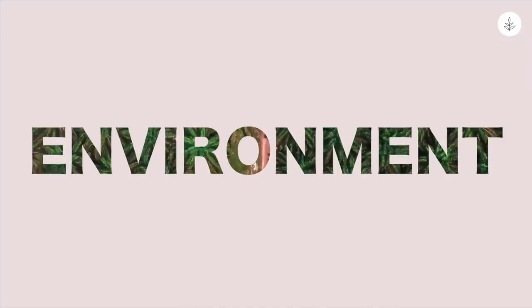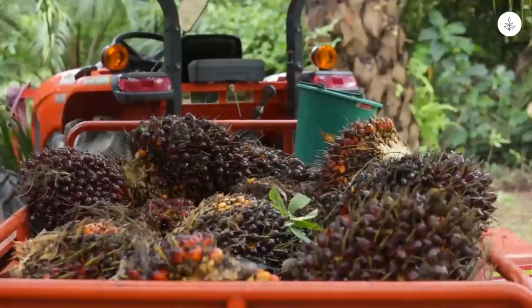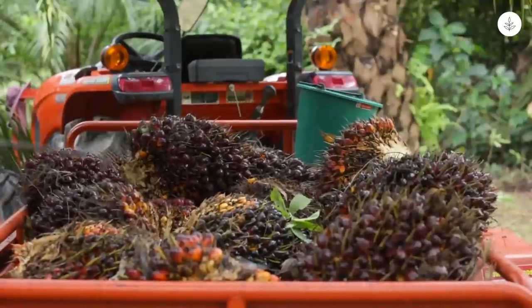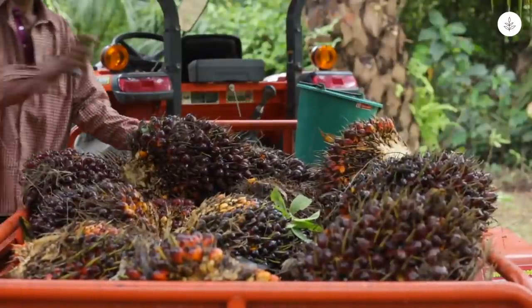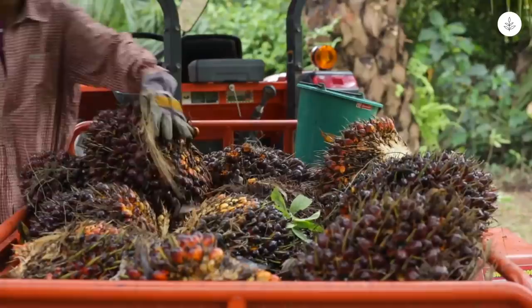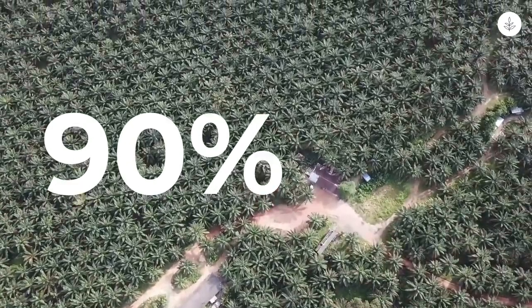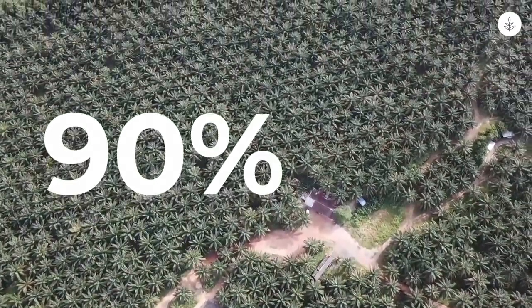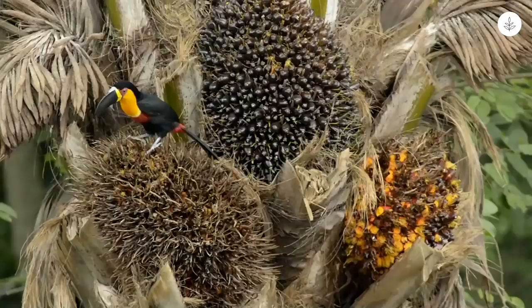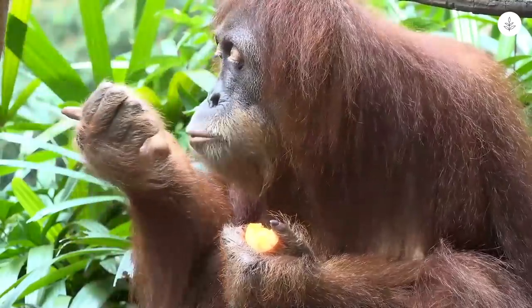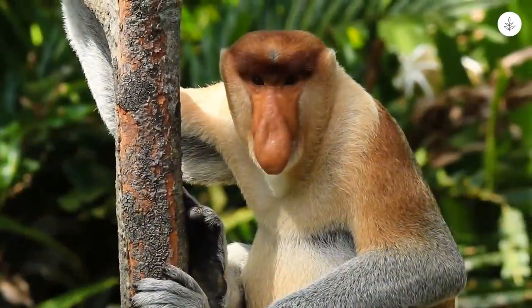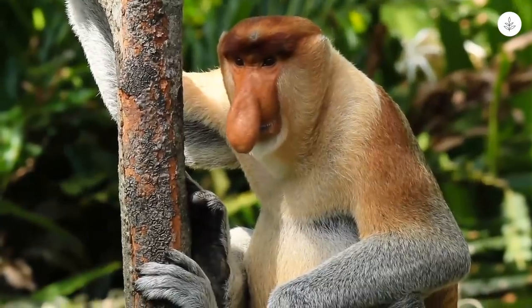Why is palm oil bad for the environment? Palm oil is found in the fruit of the oil palm tree, which exclusively grows in tropical climates. Approximately 90% of the world's palm oil is grown across just a few islands in Indonesia and Malaysia. This region contains one of the most biodiverse tropical forests in the world. While palm oil has many diverse uses, its proliferation is devastating the diversity of the natural world.